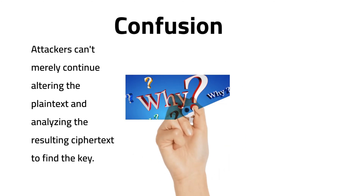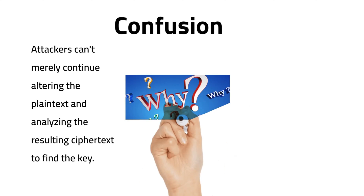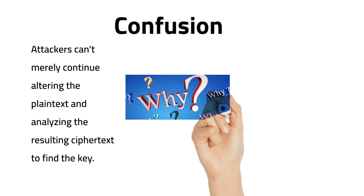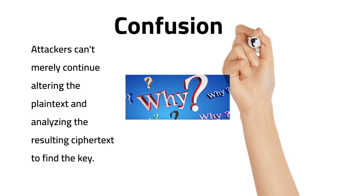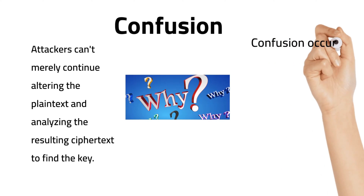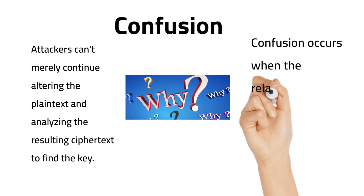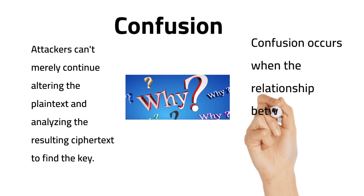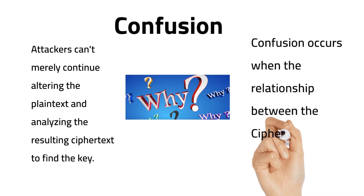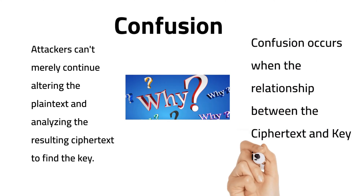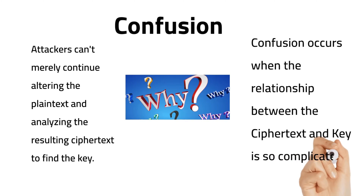Why does it become more difficult? Because the relationship between the plain text message and the key is very complicated. That is when confusion occurs.